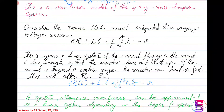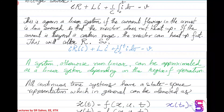Similarly, consider an RLC series circuit subjected to a varying voltage source. This is also a linear system provided the current flowing in the circuit is within range so the resistor does not heat up. If the current is beyond a certain range, the resistor heats up and the resistance value changes — resistance becomes a function of current. If run for a long time, resistance becomes a function of time and current, and the otherwise linear system would be modelled as a non-linear system.